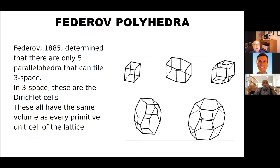In terms of the Dirichlet polyhedra, Fedorov in 1885 determined that there were only five polyhedra that can tile space. You recognize the cube—actually it's not a cube, it's a rectangular parallelepiped—and the hexagonal prism and some other ones. They all have the same volume as the unit cell and any primitive unit cell in the lattice.